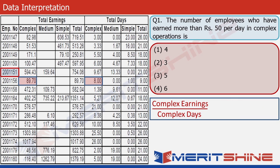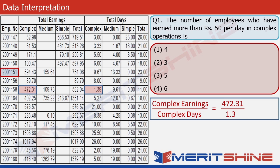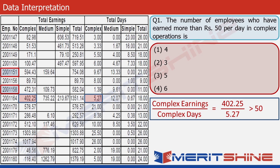Continuing: 89.7 divided by 8 — less than 50. 472.31 divided by 1.39 — much greater than 50, so it qualifies. 402.25 divided by 5.27 — greater than 50, qualifies. 576.57 divided by 21 — less than 50. To check this quickly: 21 times 100 is 2100, half of that is 1050, and the numerator 576.57 is much less than 1050, so it does not qualify.